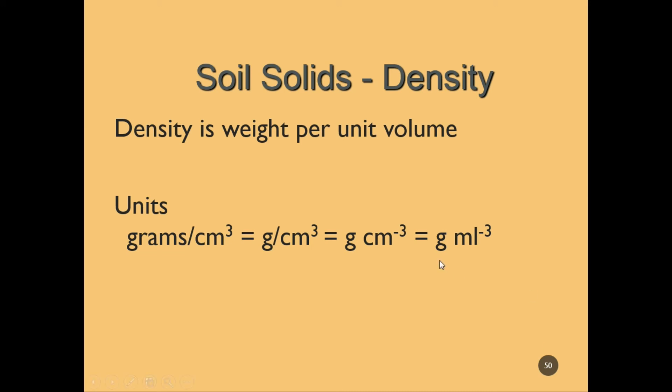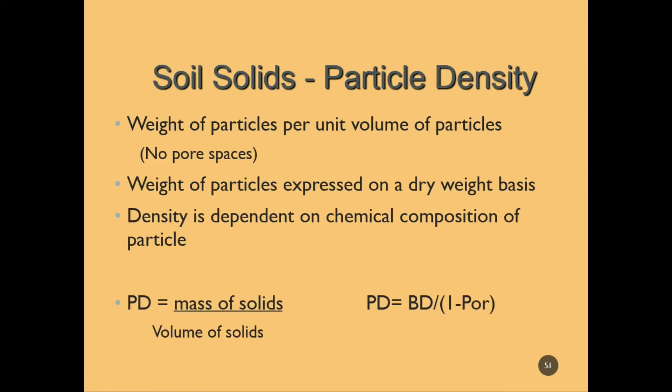The negative three exponent means 'per,' so we can take out the slash to make it more streamlined. Particle density is the weight of particles per volume — mass of solids divided by the volume of solids. And particle density equals bulk density divided by 1 minus the porosity.